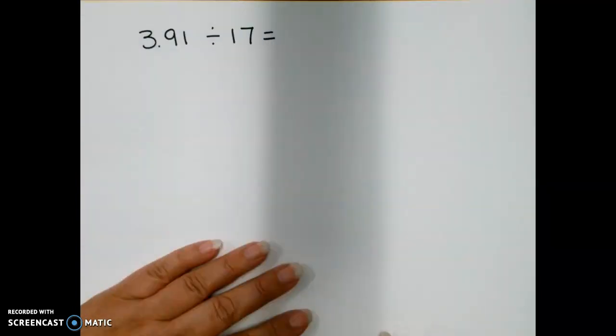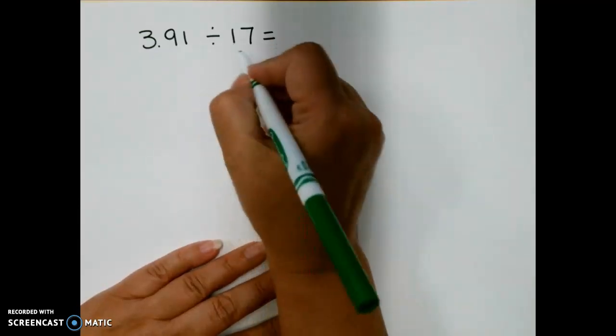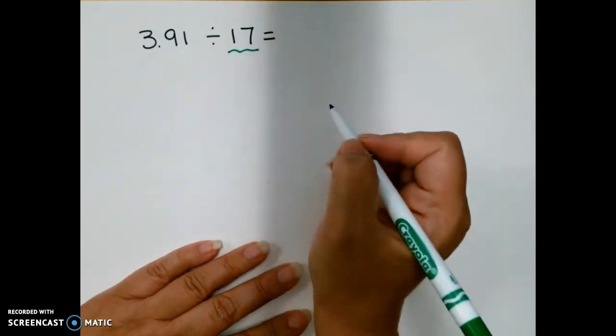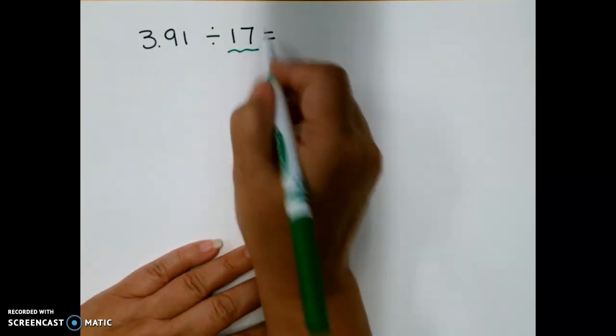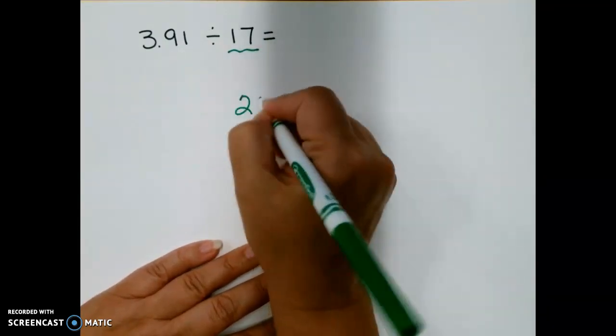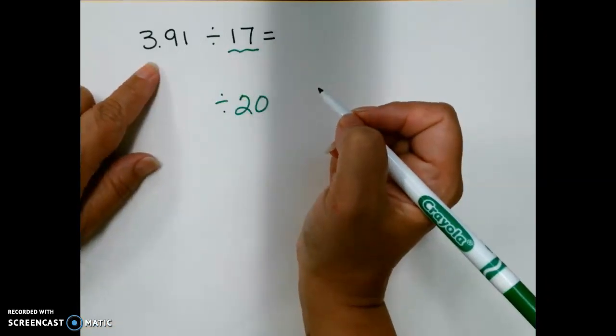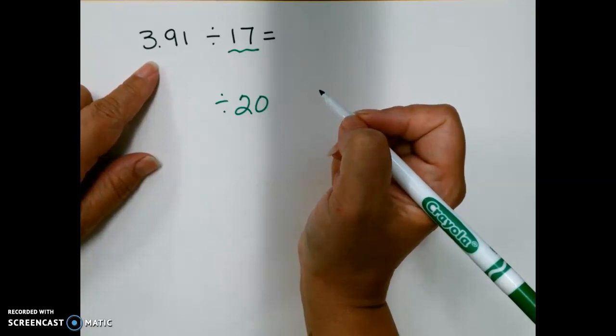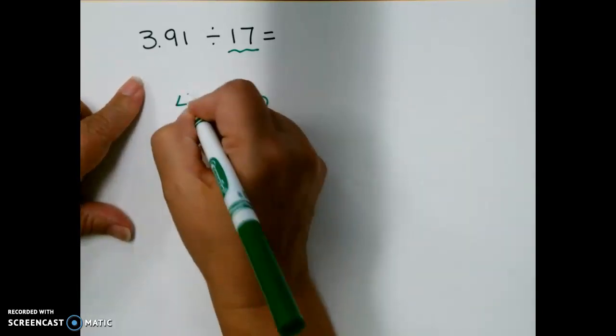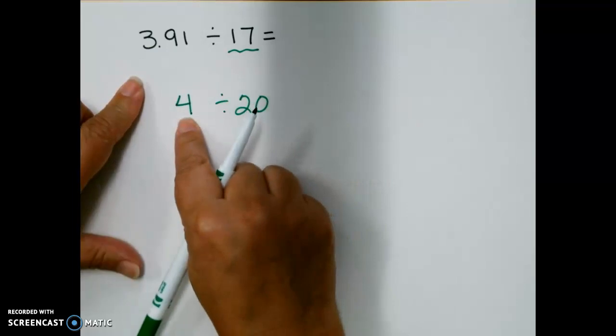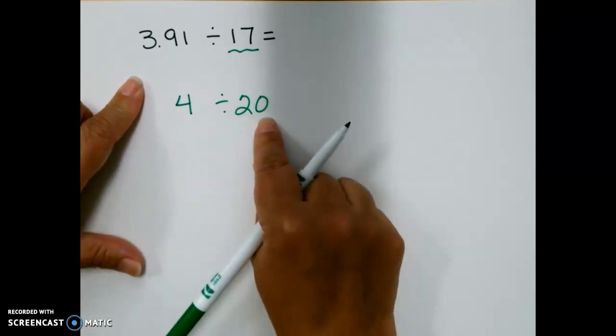Our next problem is 3.91 divided by 17. Again, we're going to round our divisor first. 17 is close to 20. So I'm going to write down divided by 20. Now, 3.91 is close to what whole number? 4. It's close to 4. So now, 4 divided by 20.